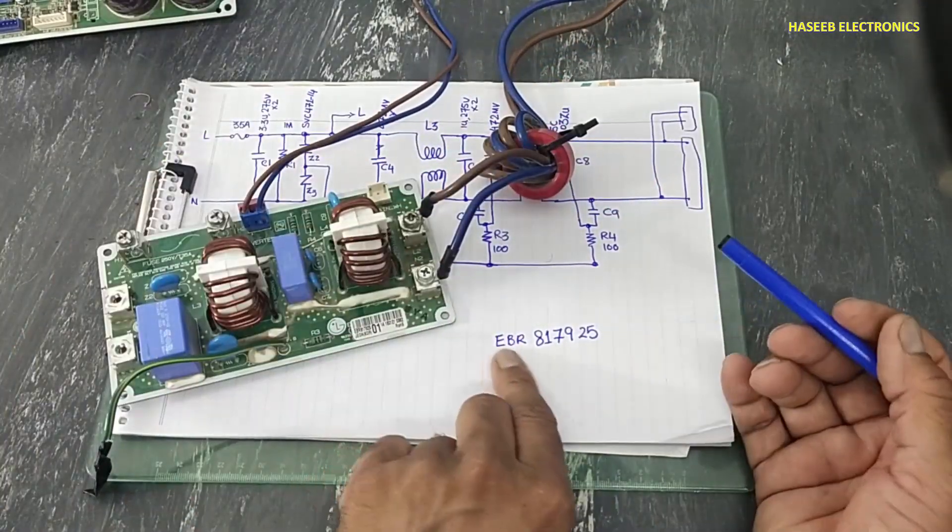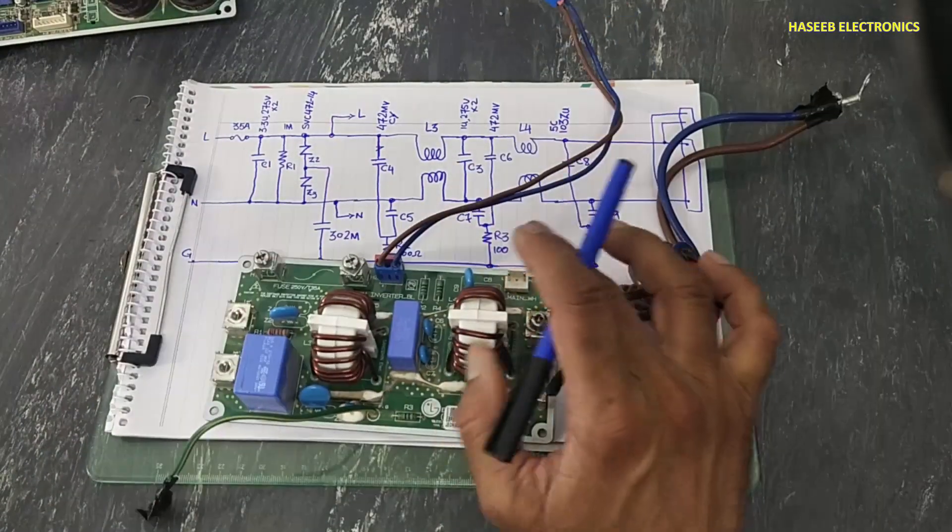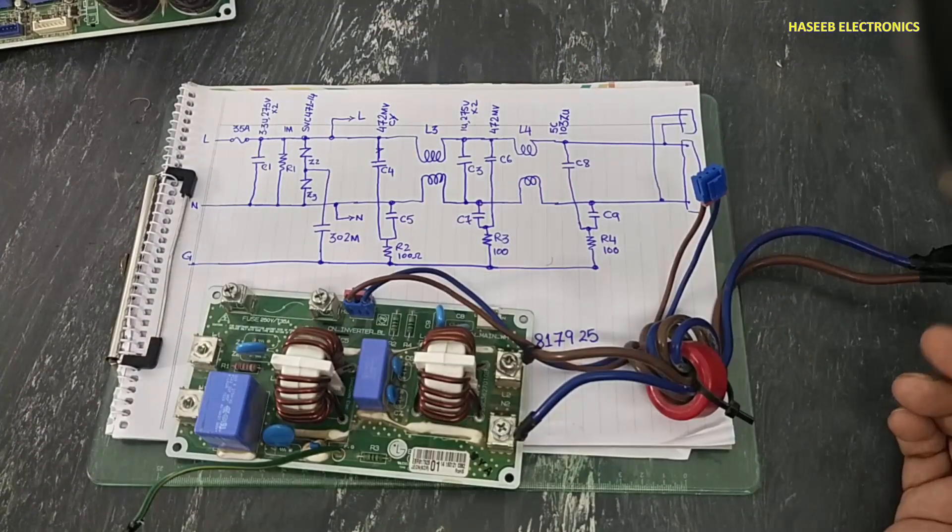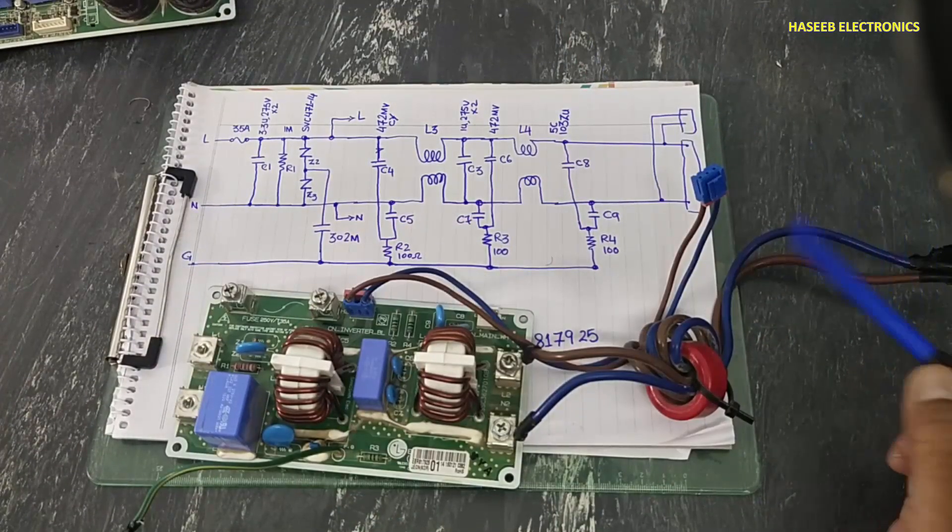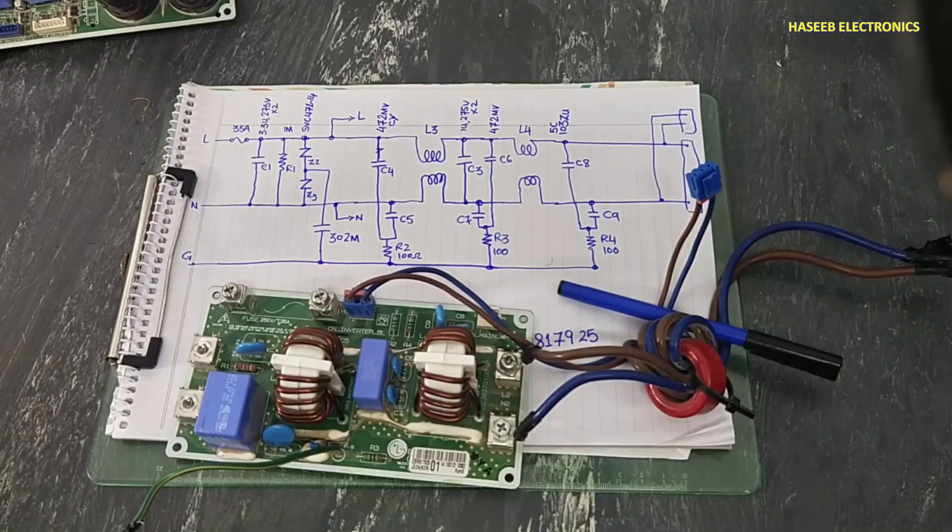Its part number is EBR817925 filter circuit board. In upcoming videos we will continue to the second board. If you enjoyed this video hit the like button, if you have any question please write in the comments. Thanks for watching, assalamu alaykum wa rahmatullahi wa barakatuh.